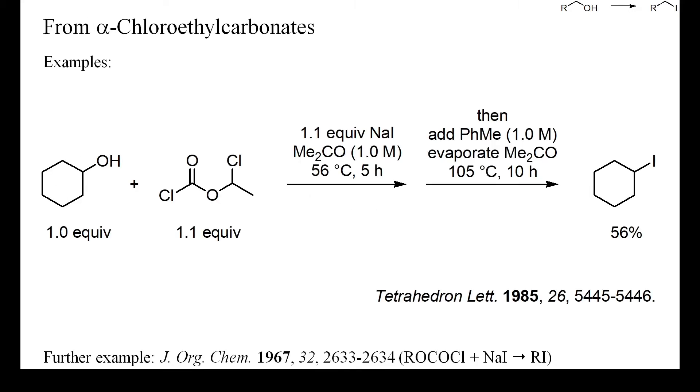It has also been reported that alpha-chloroethyl carbonates react with iodide to yield an intermediate, which upon heating yields alkyl iodides. This intermediate may be an iodoformate, but I couldn't find any proof of this. There are almost no examples of the conversion of alcohols into chloroformates followed by treatment with iodide.